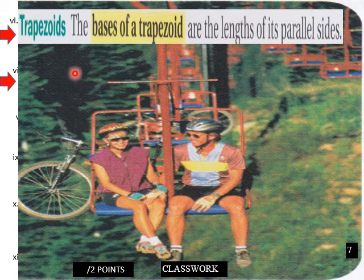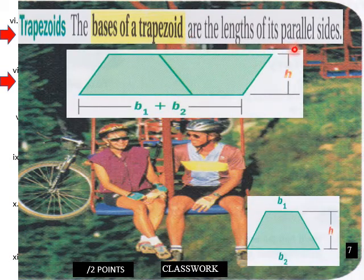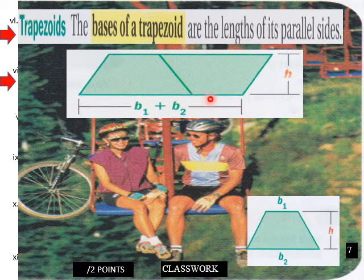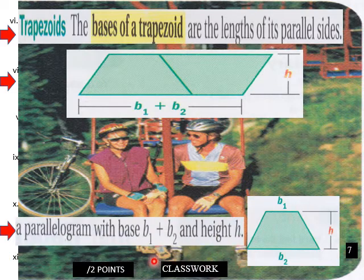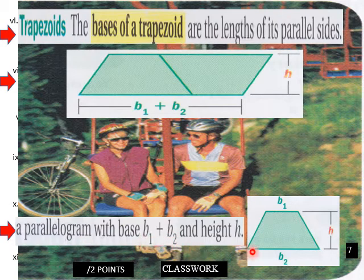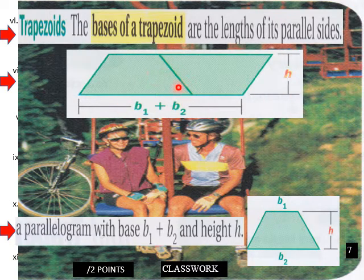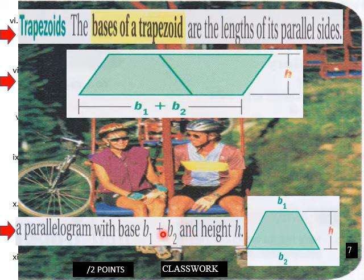Classwork page 7. The bases of trapezoid are the lengths of its parallel sides. So we have base 1, base 2. Here's a trapezoid here. And we're putting these two together here to try to visualize the formula here for finding the area of the trapezoid. So it's b1 plus b2. Here is b1 plus b2. So we kind of flipped it over. And you get b1 plus b2 times height here. This is a way of visualizing this formula here.